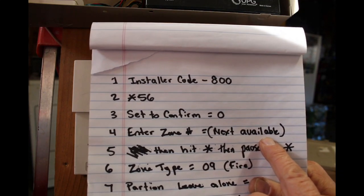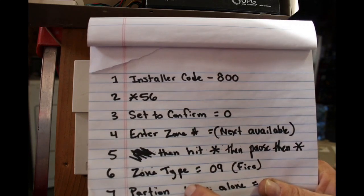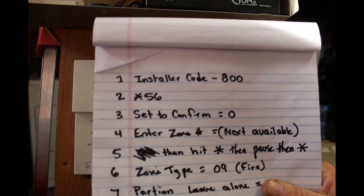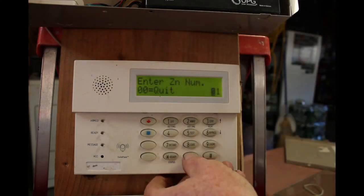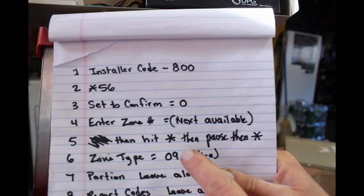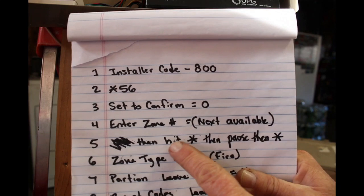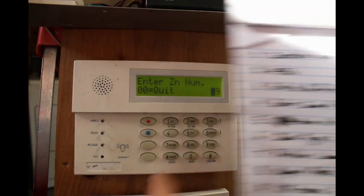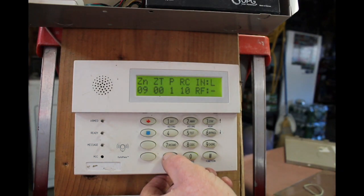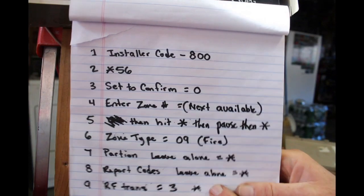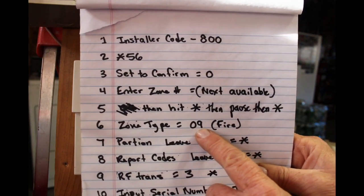Enter zone number, that's the next available that you have. If you don't know what yours is, go up to like 16 and most likely that's going to be available for you. My next zone number that's available is 09, so I'm going to hit 09. All right, so I hit the next available zone, and then it says hit star, then pause, and then hit star. So hit star, you pause a second, then you hit star. Zone type: you're going to be doing a fire alarm, so you put in 09.